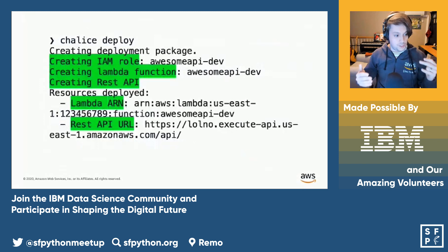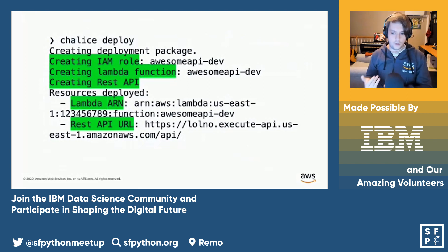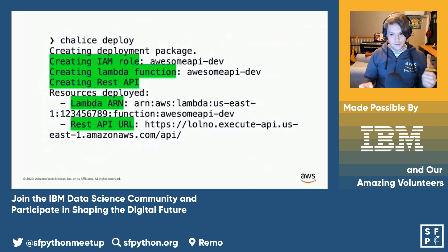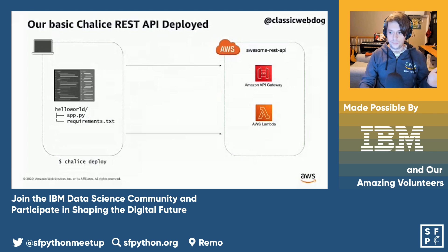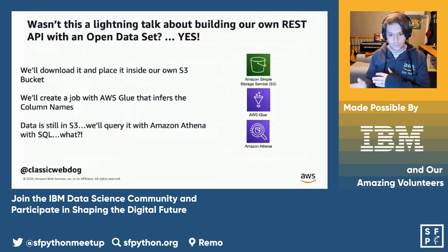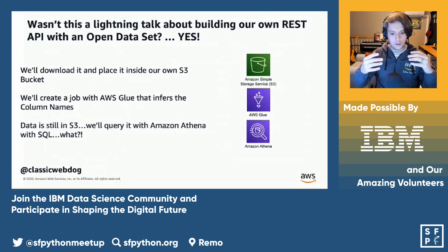When you actually go to deploy, Chalice takes care of a lot of the hard work — things like your IAM roles, creating Lambda functions — and will automatically deploy those resources for you. Once it's ready to go, you can hit your endpoint and you've got data returned. Essentially, we've deployed a Chalice application, an API Gateway instance that was automatically provisioned for us, and an AWS Lambda instance.